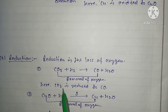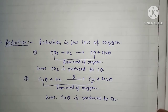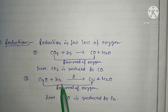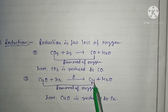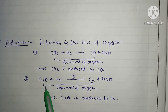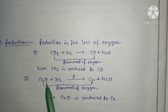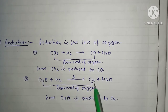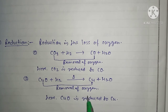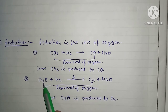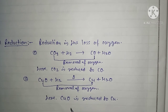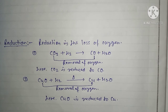Next example: copper oxide reacts with hydrogen gas, and the products obtained are copper metal and water. Here copper oxide was on the reactant side and in the product side only copper remains — loss of oxygen has occurred, which we can also call removal of oxygen. So CuO undergoes reduction; CuO is reduced to Cu. Such chemical reactions are called reduction reactions.